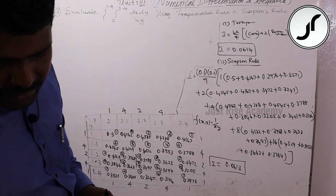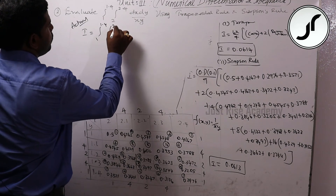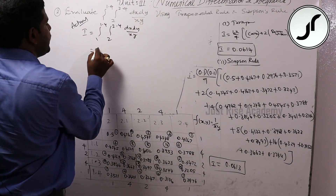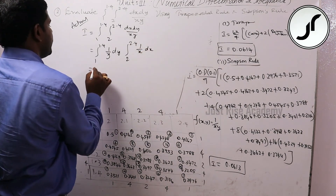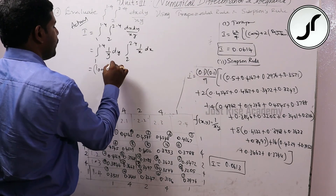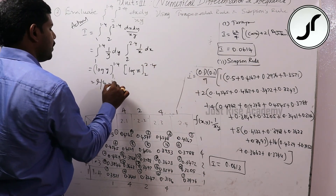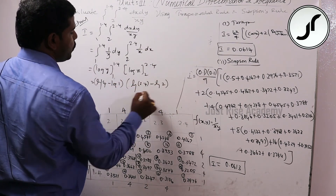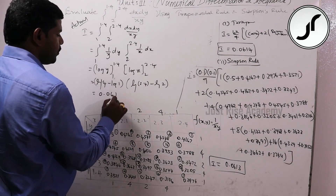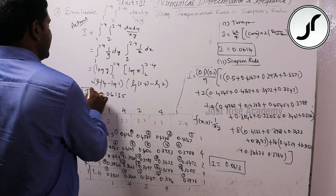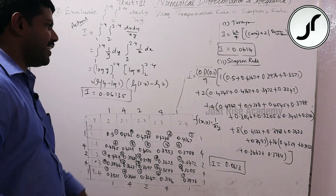For verification by actual integration: I = integral from 1 to 1.4, integral from 2 to 2.4 of dxdy/(xy). This separates as [integral of (1/y)dy from 1 to 1.4] × [integral of (1/x)dx from 2 to 2.4] = [log 1.4 - log 1] × [log 2.4 - log 2]. Using the calculator: actual value = 0.06135. Comparing: Trapezoidal rule gives 0.0614, Simpson's rule gives 0.0613 — both are very close to the actual integration result.